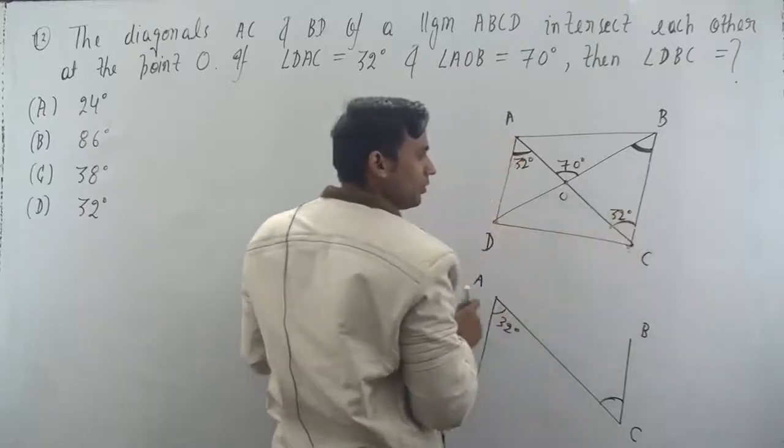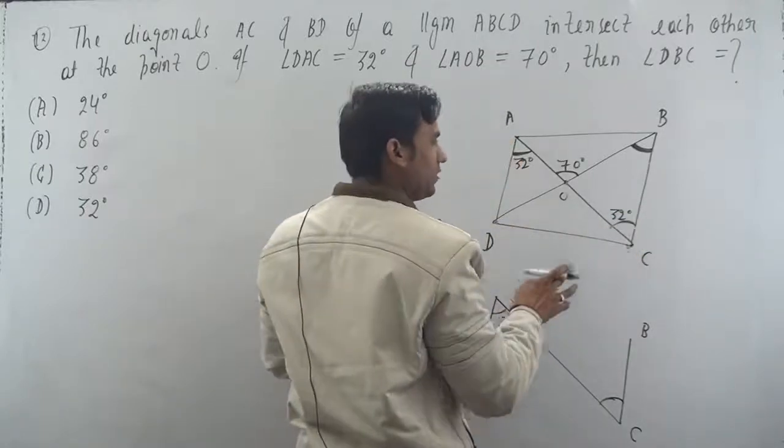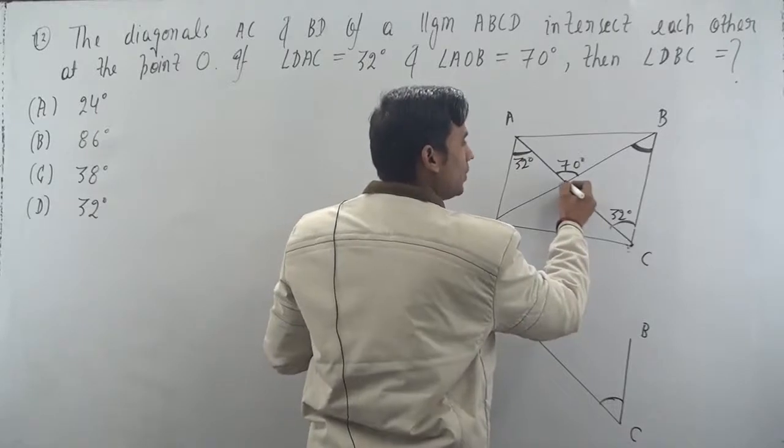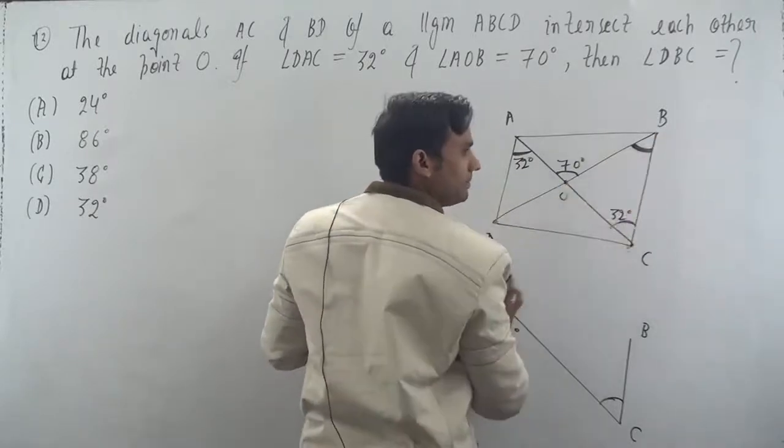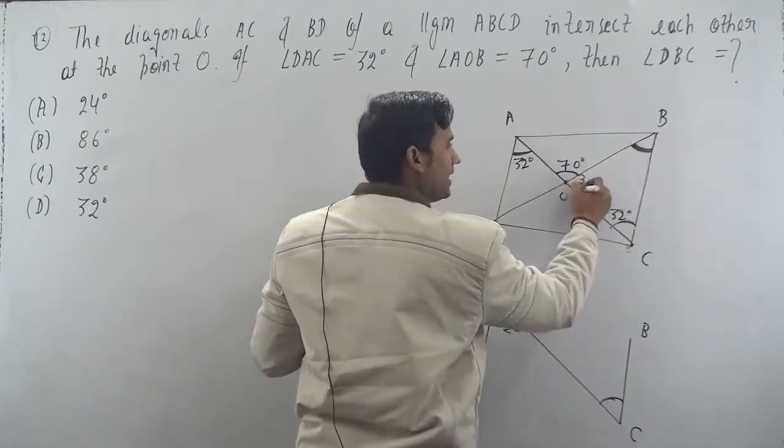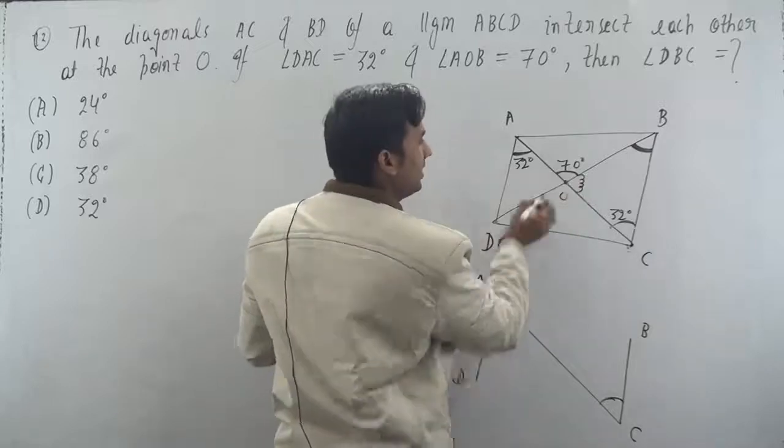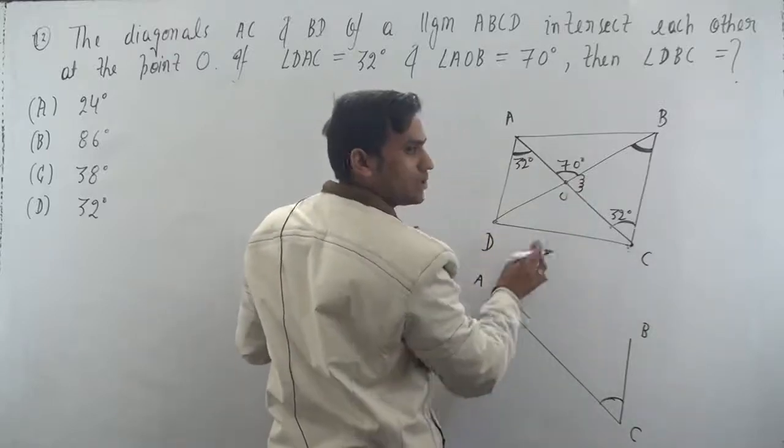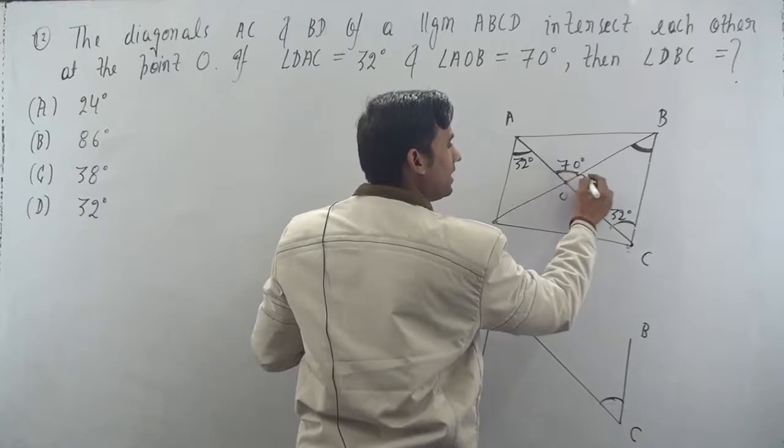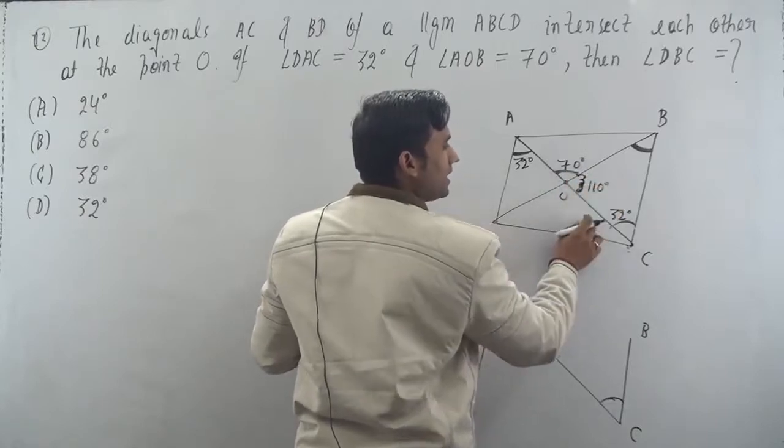Uske baad ham kya karenge? Triangle OBC mein aap dhyan se check karo. Ye wala angle aap find kar sakti ho kya? Yes. Kaise? AOC is a straight line. So linear pair concept se, ye agar 70 hai, so ye kitna hojayega? 110 degrees. Correct.